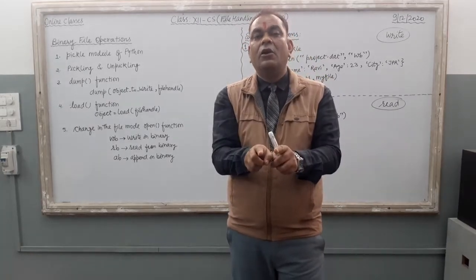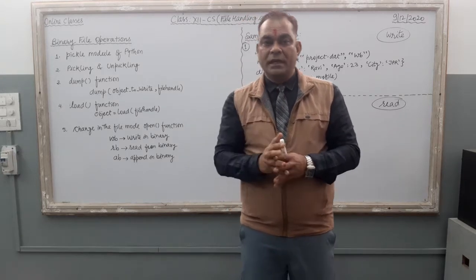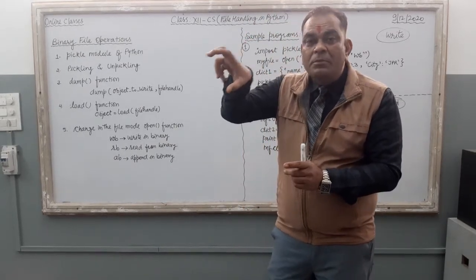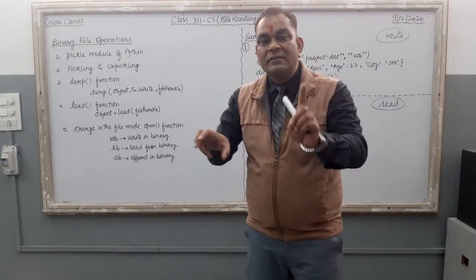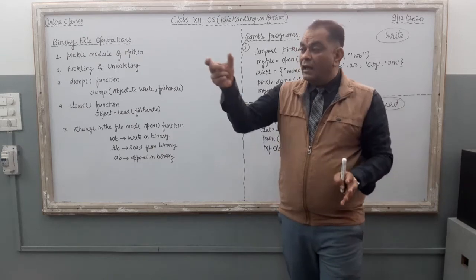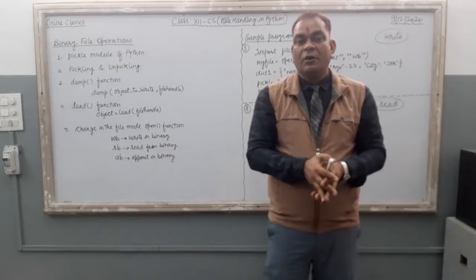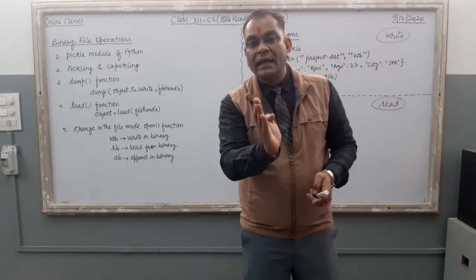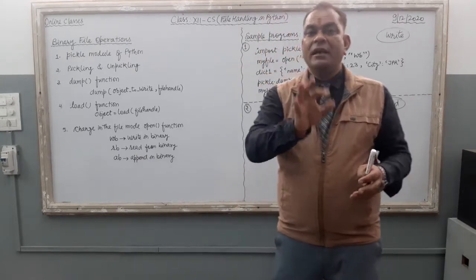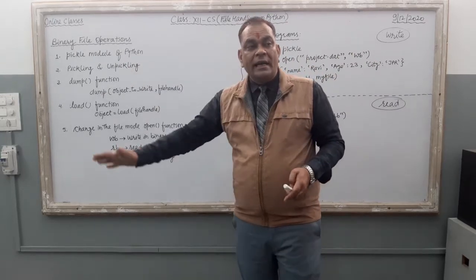After string, list, tuple, and dictionary are there in Python. These three things — list, tuple, dictionary — are called objects of Python. If you want to store data of these objects into a file, you use binary file operation commands. If you have some confidential data in those objects and you store it in a binary file, the data is encrypted and remains confidential.